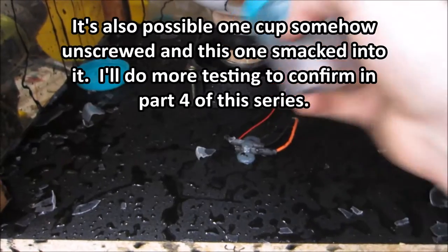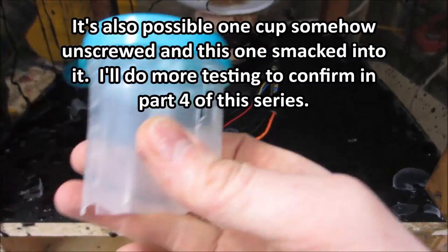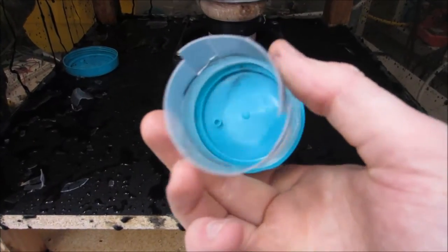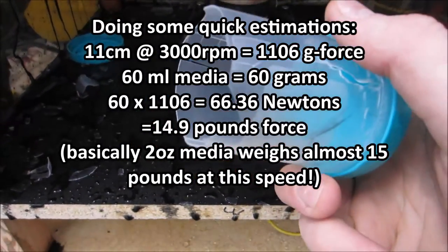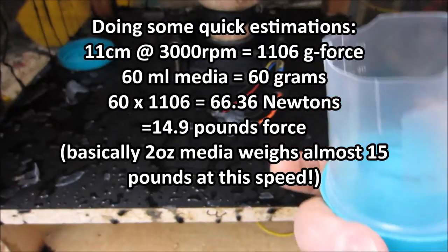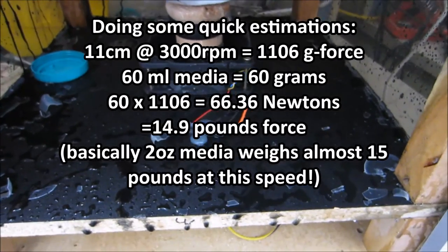Like, it's not even like this part failed or some other part of my centrifuge failed. The actual sample cups can't handle that speed. I did not anticipate that. Holy cow. Well on the bright side I know that my protective shields work really well. Holy crap.